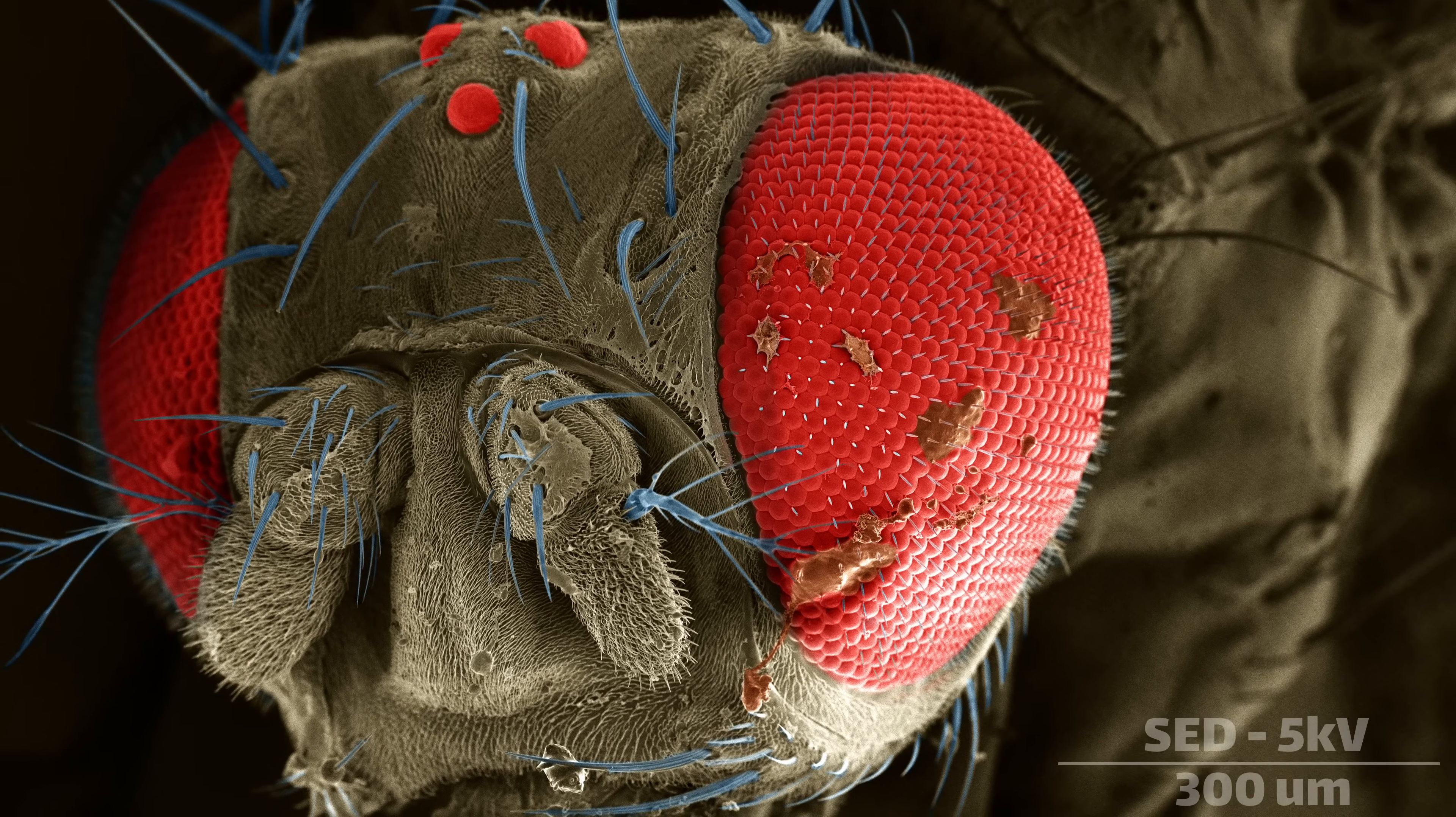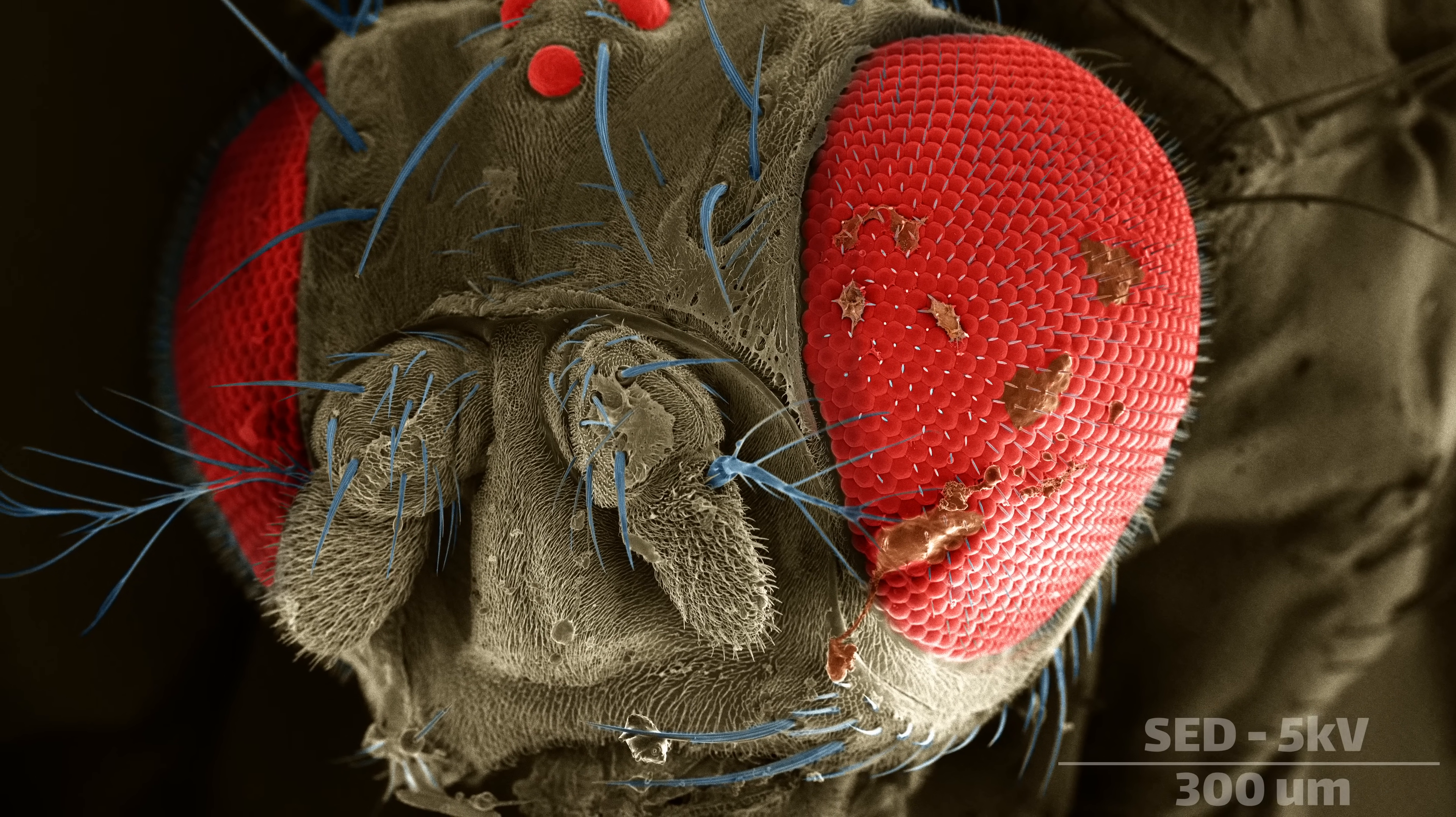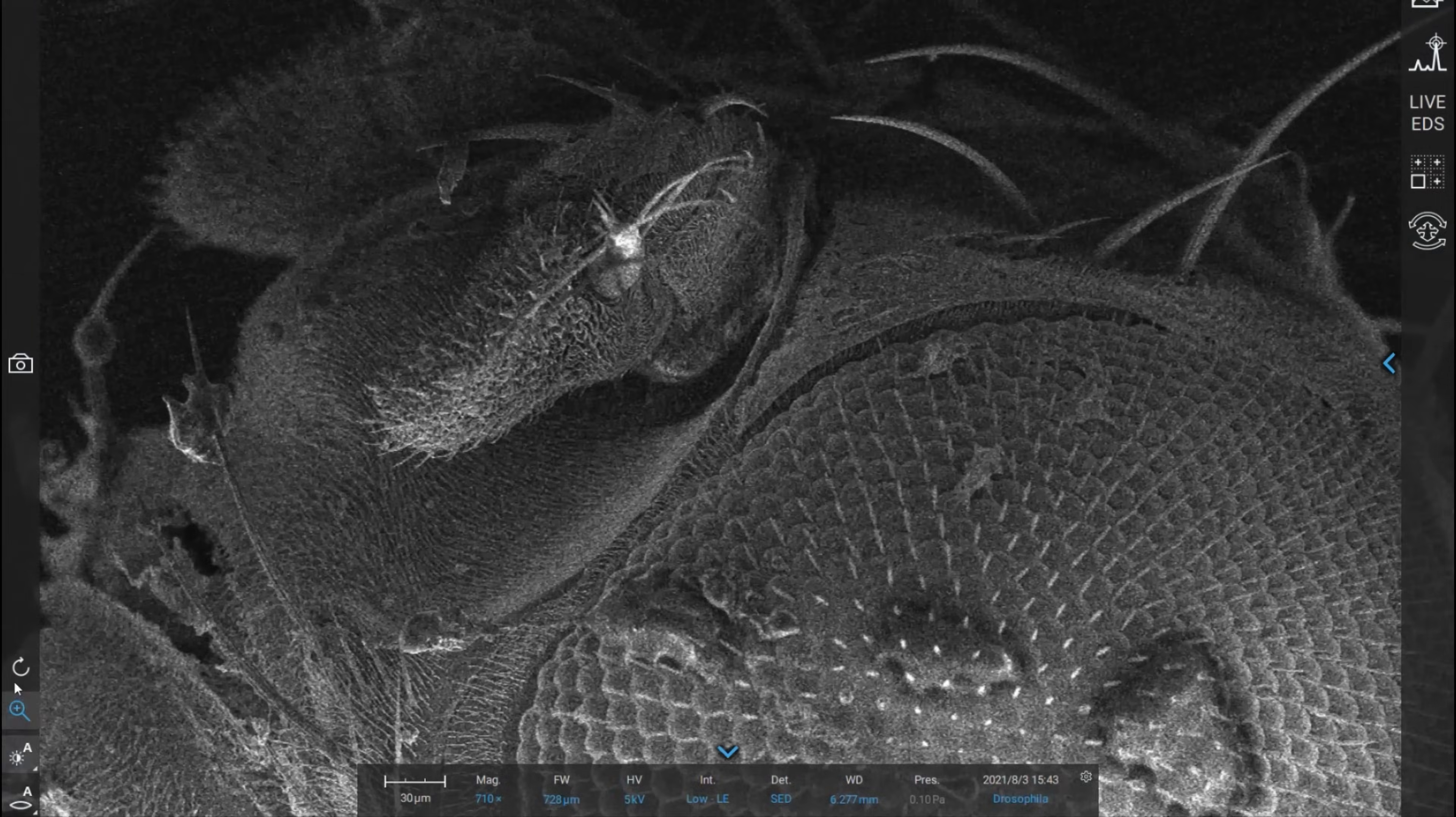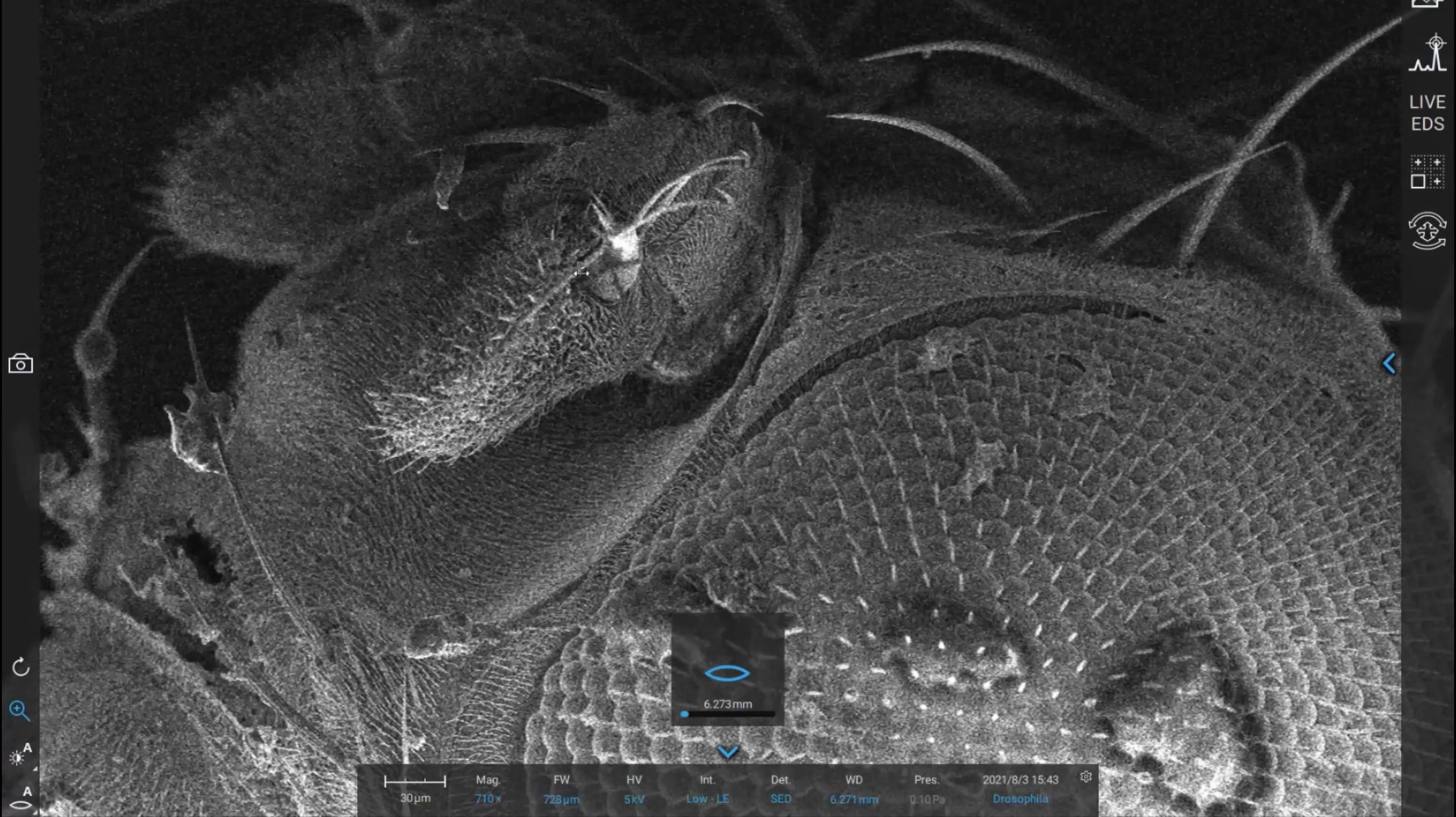Even the most mundane or forgettable subjects can become endlessly beautiful when viewed at the microscopic level. The crystalline symmetry of common table salt, or the organically alien landscape of an oak leaf, all show remarkable beauty when viewed at a high enough magnification to see the details that are normally obscured by the inferior instrument that is our eyes.